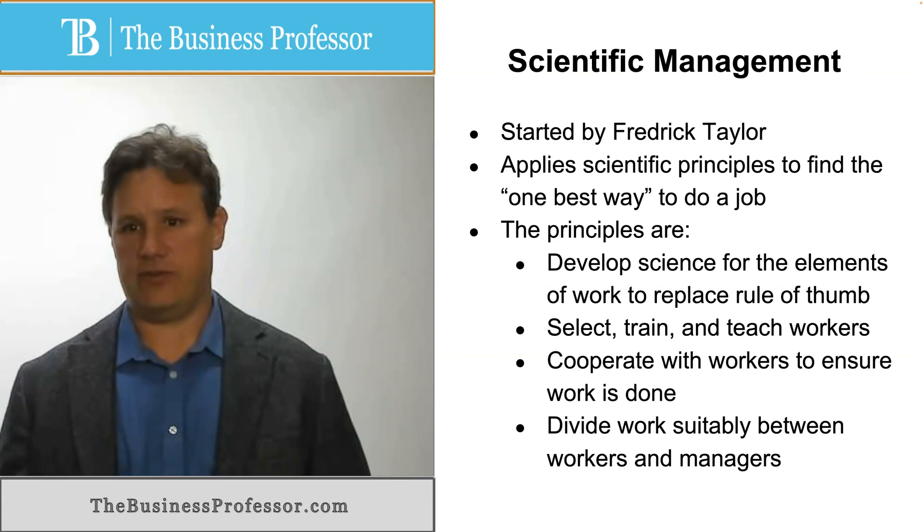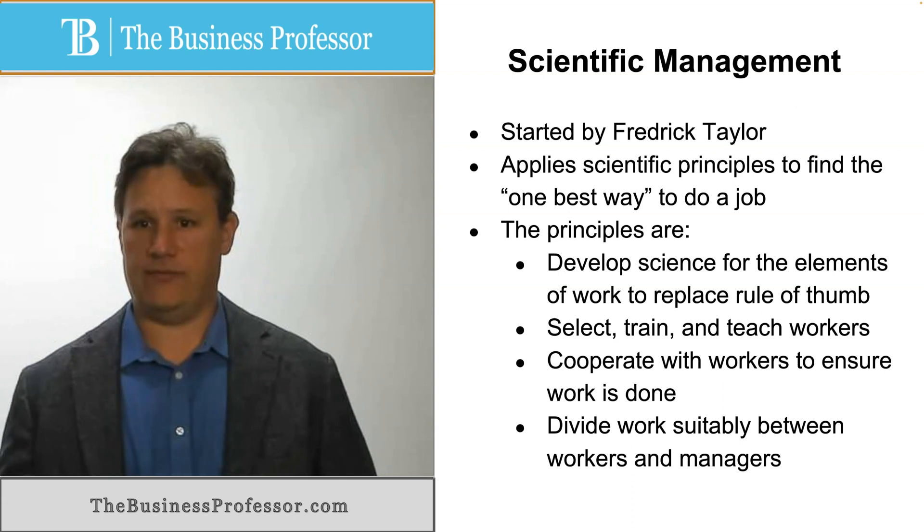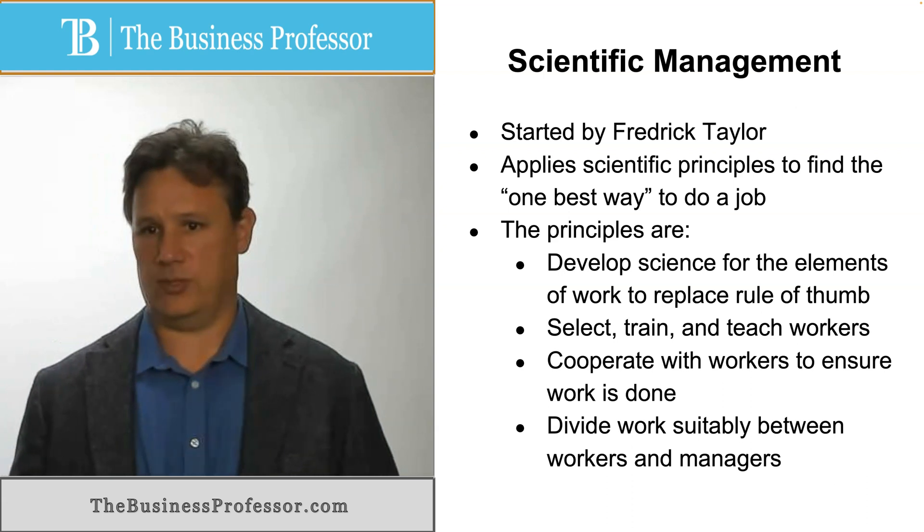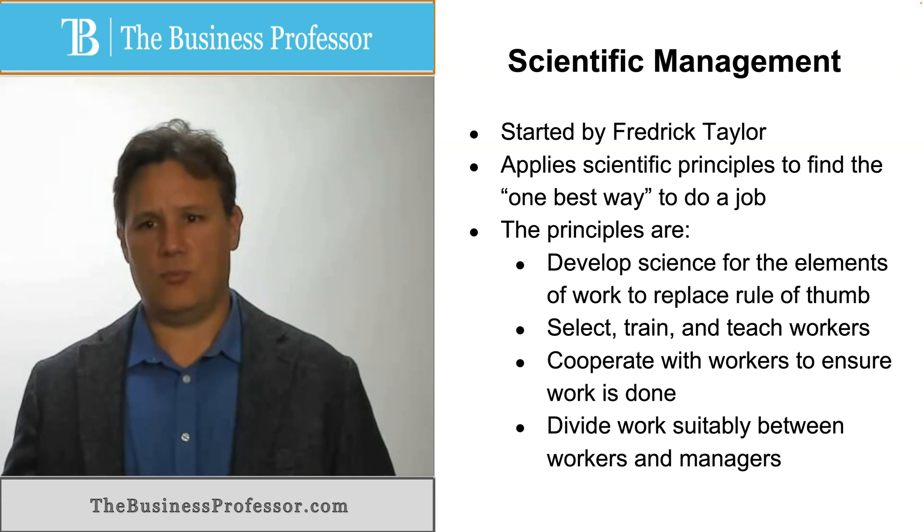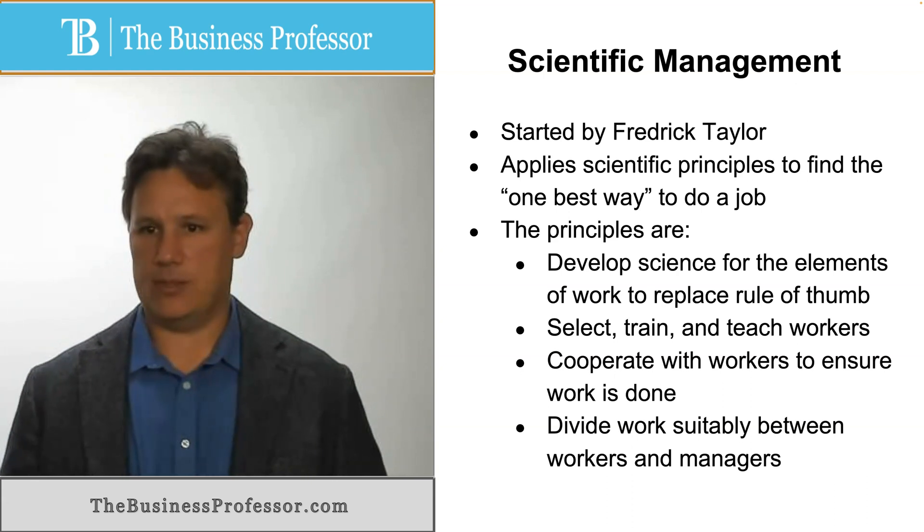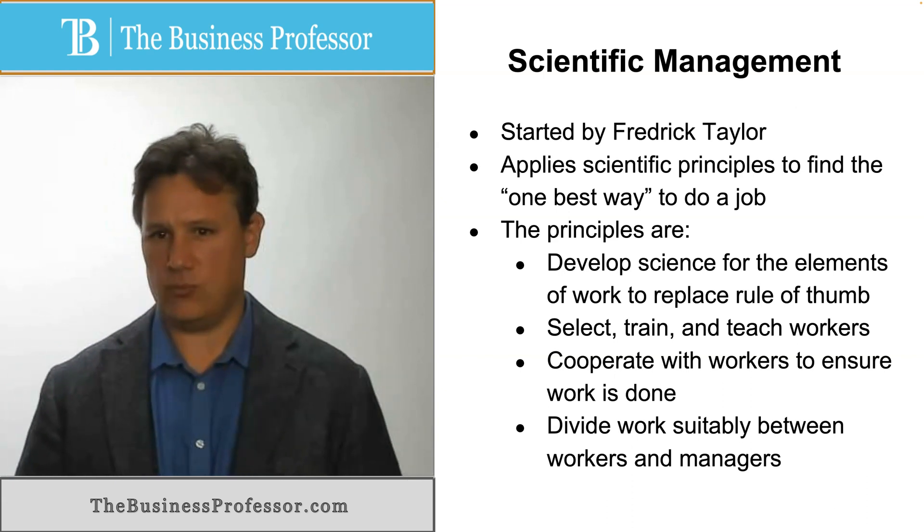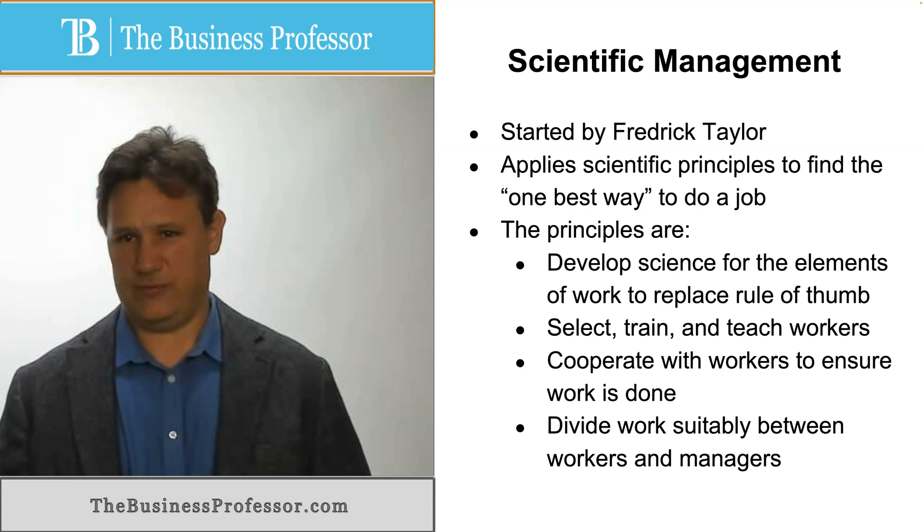The general principles of scientific management is, first off, we develop a science for the elements of work to replace the rules of thumb. Pre-Taylor, workers were just kind of assigned to whatever job. They brought their own tools. They did it in whatever way that they thought they should do it. There was no agreed-upon way of doing anything.